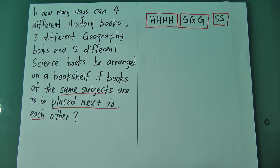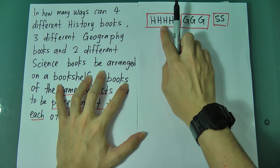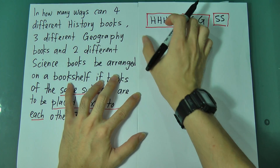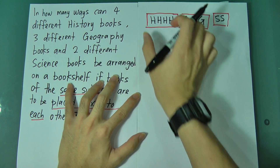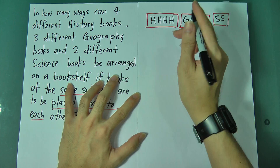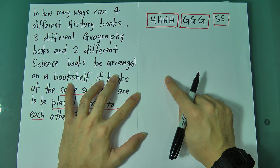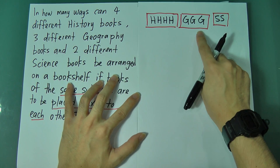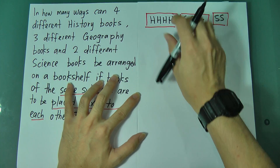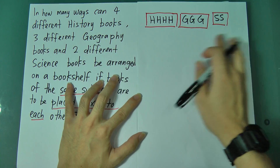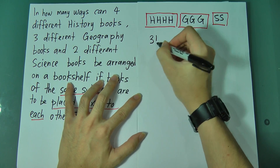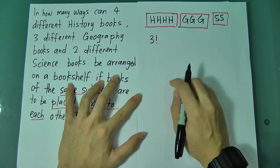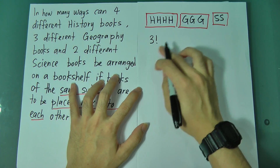Imagine if you have 3 books. These 3 books can change place by themselves. The first place you can put history, the second place geography, the third science. If you put geography in the second place, the last place is science. So if you have 3 books, they can simply change place by themselves — we call this 3 factorial. 3 factorial means 3 objects that can change place; we call it 3 factorial.